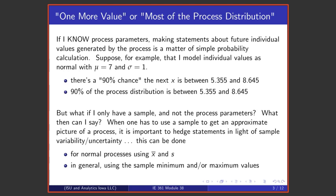If I know process parameters, making statements about future values generated by the process is probability. If, for example, I model individual values as normal with some mean and standard deviation, I can make statements like there's a 90% chance that the next X is in a certain interval. I can equally say that 90% of all future outcomes are in that same interval.